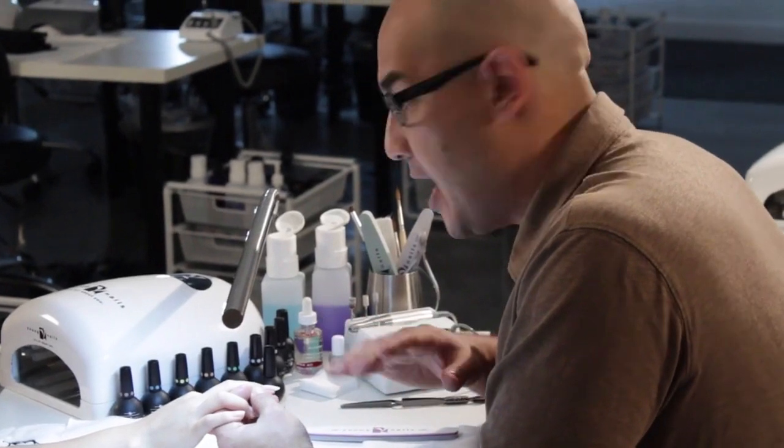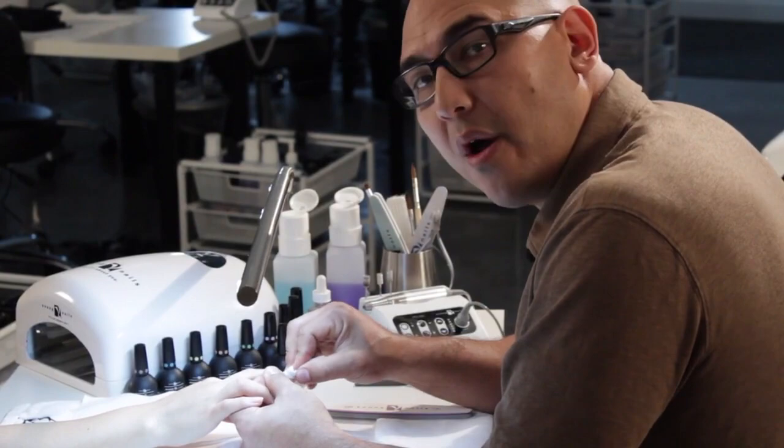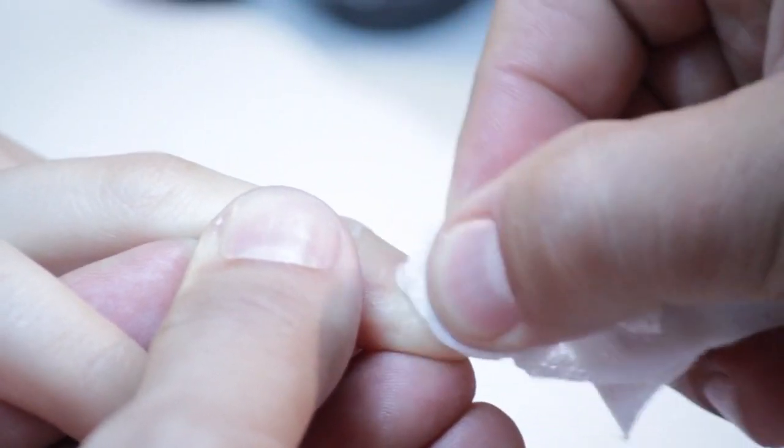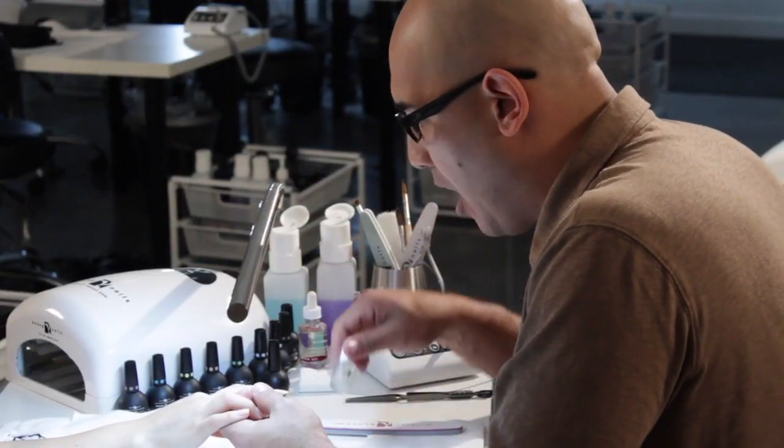Once we remove shine from the natural nail, we're going to take swipe and remove the oils and contaminants from the surface of the natural nail. Once we've done that, we're ready for our protein bond application.